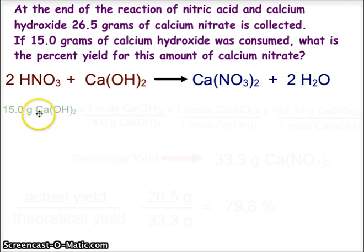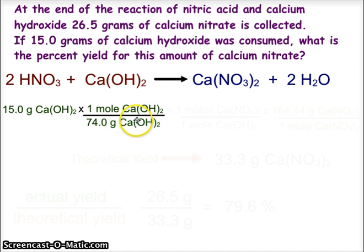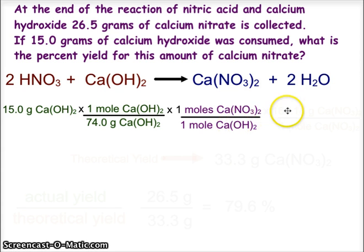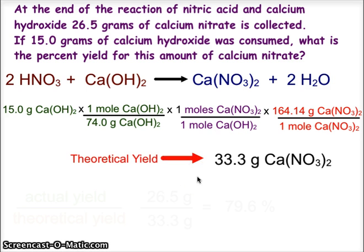We are going to begin with that 15 gram sample of calcium hydroxide. We will multiply by 1 mole over the gram formula mass of calcium hydroxide, which is 74. We then use the mole to mole ratio of calcium hydroxide to calcium nitrate, which is 1 mole to 1 mole, and we follow that up with the gram formula mass of calcium nitrate. This gives us a theoretical yield of 33.3 grams of calcium nitrate from the mathematical conversion.